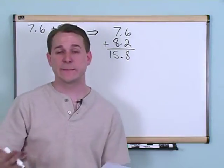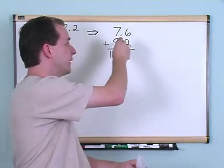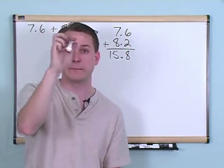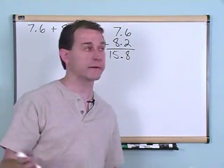So literally it is exactly the same thing as what you've done before. You add your numbers, and when you're done you take that decimal point that you've lined up and pop it down there. Nothing special, nothing hard.